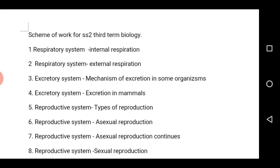In the third week, we are going to have the mechanism of excretion in some organisms. In the fourth week, we continue with the excretory system, that is excretion in mammals. In the fifth week, we shall look at the reproductive system, that is the types of reproduction.